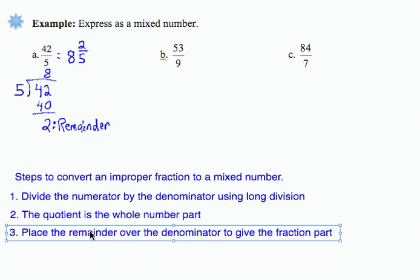Once we found the remainder, which was 2, we placed it over the denominator to get the fraction part. And then we could add a step 4 that says check by converting to an improper fraction, just to be sure that you're correct. So let's see how this process would work for the remaining two examples.